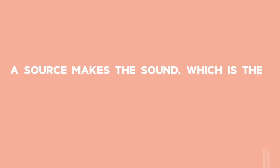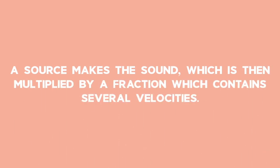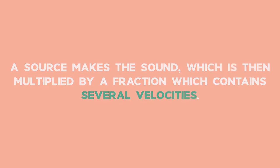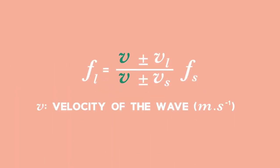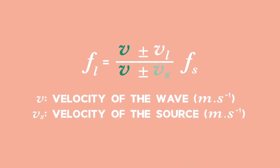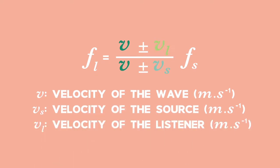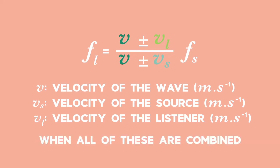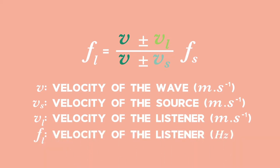A source makes the sound, which is then multiplied by a fraction which contains several velocities: the velocity of the wave itself, V; the velocity of the source, VS; and the velocity of the listener, VL. Remember, all the values have to be in the correct units. When all of those are combined, they equal the new or experienced frequency by the listener, in hertz.